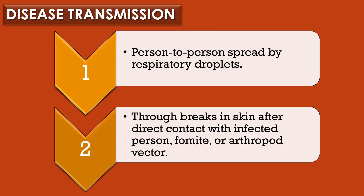Next, disease transmission of Streptococcus pyogenes. Streptococcus pyogenes infections are mainly transmitted by two modes. The first mode is person-to-person spread by respiratory droplets. The second mode is through breaks in the skin after direct contact with infected persons, fomites, and arthropod vectors.